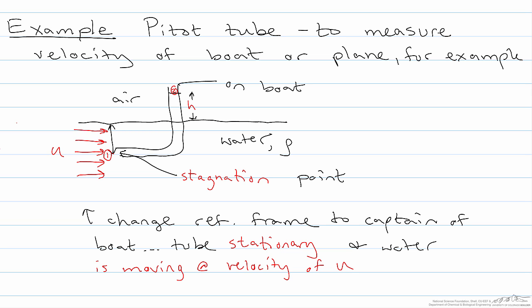This tube is at a depth of d below the surface, and so the pressure here at point 1 is equal to p ambient plus rho g d, and the pressure here at point 2 is p ambient, because both point 2 and the surface of the water are exposed to the ambient air.